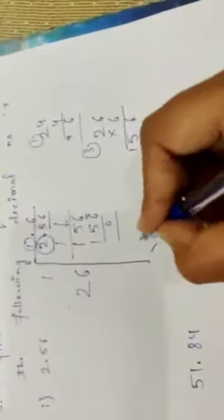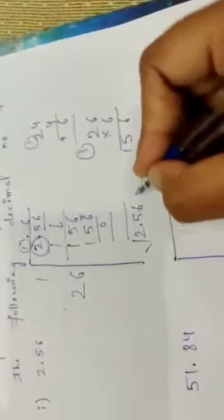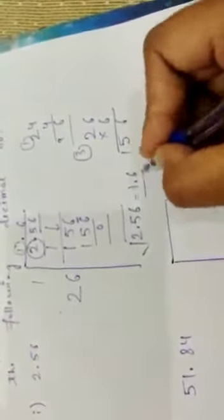Next number is 6. 6 times 6 is 36. So 6 times 6 is 36, 6 times 2 is 12, 12 plus 3 is 15. So it's 6 and 6, and it's 156. So the square root of 2.56 is 1.6.